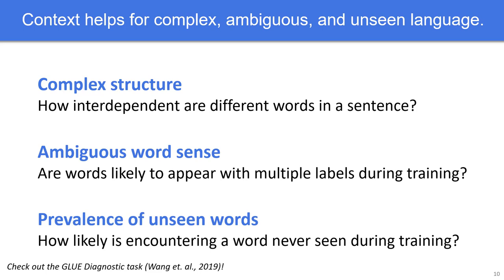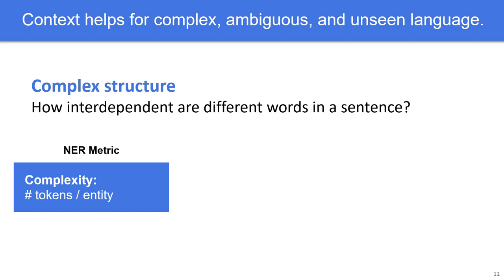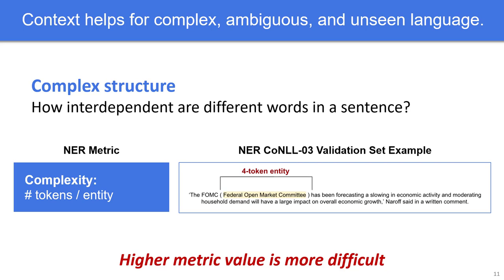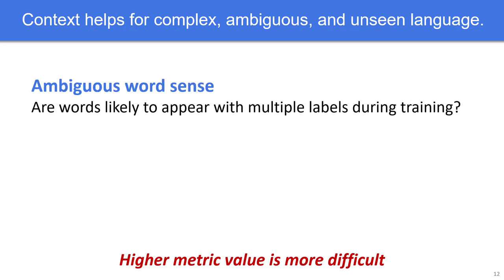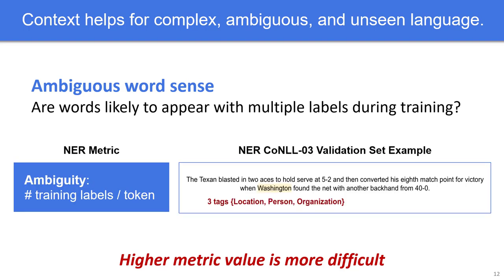To make these properties more concrete, we define specific metrics to measure each property. For the complexity metric, we consider the number of tokens spanned by the entity name. For example, Federal Open Market Committee is a four-token entity, and correct classification requires understanding the relationships between the different tokens in the entity name. Note that for each of these metrics, a higher metric value indicates higher difficulty. For the ambiguity metric, we consider the number of different entity labels a word is classified as in the training data. For example, Washington occurs as a location, person, and organization in the training data, so context is important for disambiguating this word at test time.